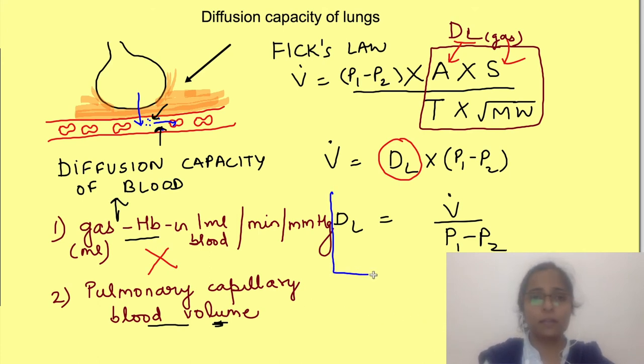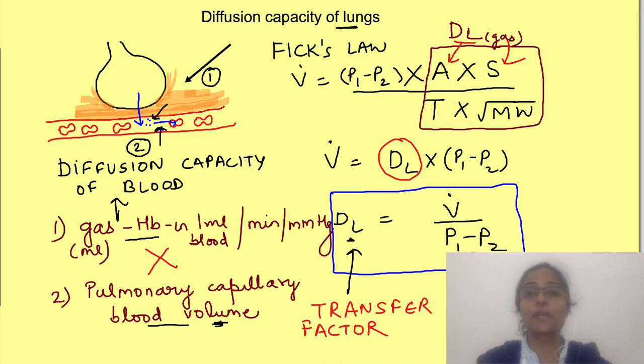Now in this formula which we have rewritten even though here we are calling it as diffusion capacity of lungs for a gas, when we determine this DL using a gas physiologically both these effects are occurring for the uptake of the gas in the body. So the value which we get represents both the diffusion capacity of membrane as well as the diffusion capacity of blood. So basically DL represents the entire diffusion distance which needs to be covered by a gas physiologically. That's why it's also known as transfer factor because it measures the transfer of gas from air in the lungs to RBC in pulmonary capillaries and not only diffusion of gas across respiratory membrane.